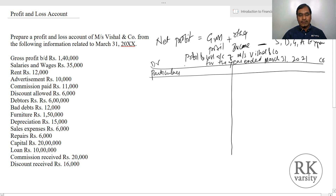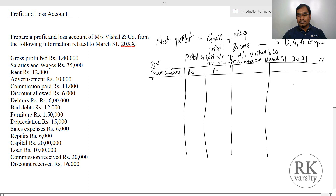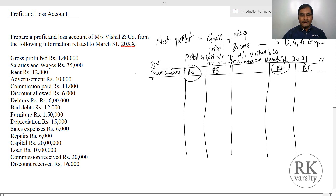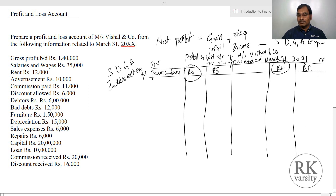We write 'Particulars' with one inner column for calculations and an outer column in rupees on both sides. The inner column is used for calculations or adjustments, and the final value is reported in the outer column. On the debit side we bring all selling, distribution, general and administrative expenses — in simple terms, your indirect expenses. On the credit side: gross profit and other income.